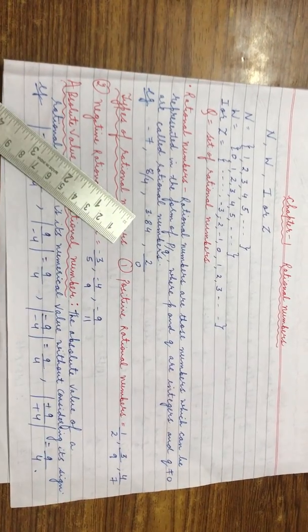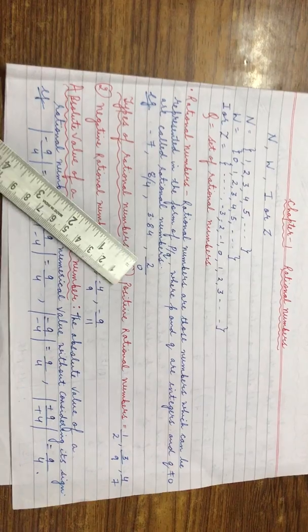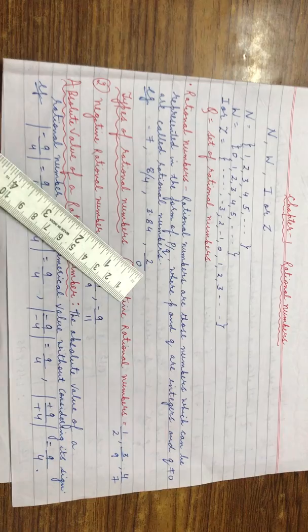Now comes 2 upon 0. Here we get the value of Q as 0, so it is not defined.